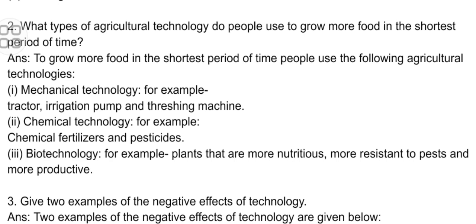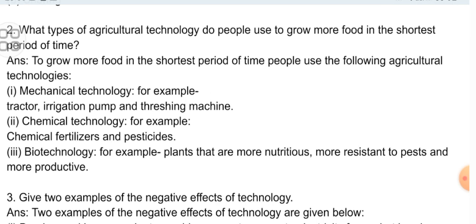Second short question: What type of agricultural technology do people use to grow more food in the shortest period of time? Answer: People use the following agricultural technologies — Mechanical technology, for example: tractor, irrigation pump, and threshing machine. Chemical technology, for example: chemical fertilizer and pesticides. Biotechnology, for example: plants that are more nutritious, more resistant to pests, and more productive.